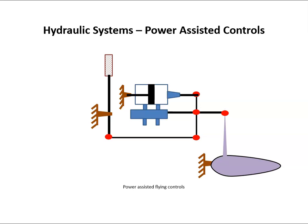When we get into aircraft that are flying at reasonably high speed, the pilot might need some power assistance to help them move the flight controls. Here we have an example where the control stick is connected directly to the flight control, but we also have a hydraulic actuator here.